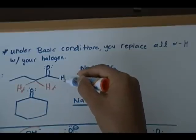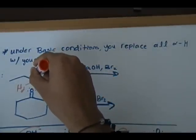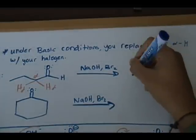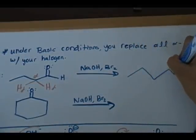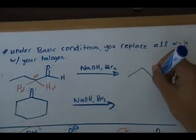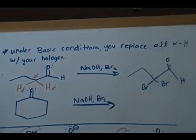Again, the alpha H's are the H's that are hanging off the alpha carbon. And there's your alpha carbon right there. So in order for us to draw our product, which is extremely easy, all we do is draw the same starting material and replace those two H's with bromine since that's the halogen we're working with. And we're done.